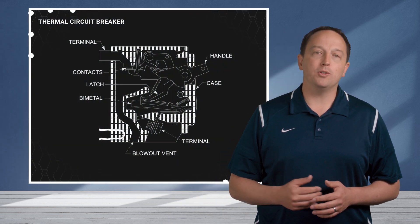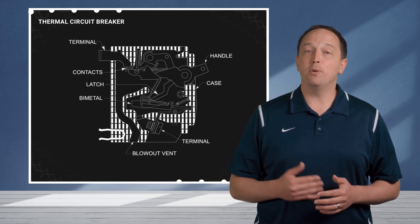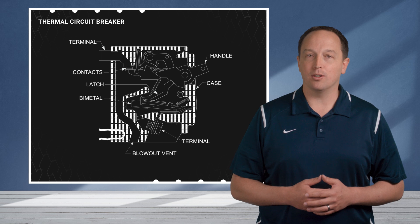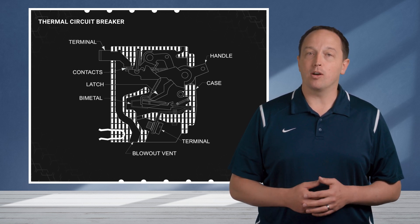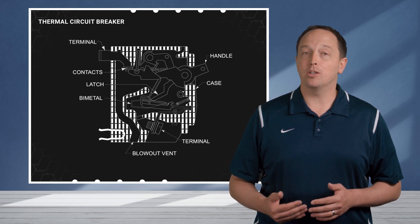A thermal circuit breaker uses a thermal sensing element, often called a bimetal, that is designed to deflect and open the circuit breaker at a predetermined temperature. Current flowing through the element causes I2R heating, and the current capacity is determined by the size, shape, and construction of the element.